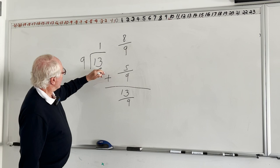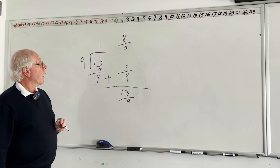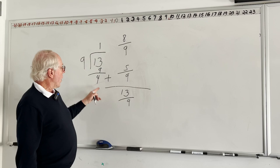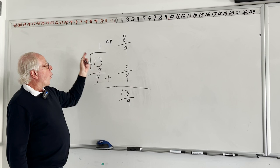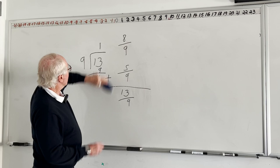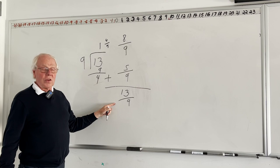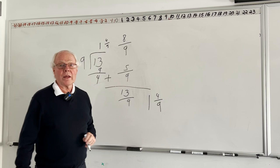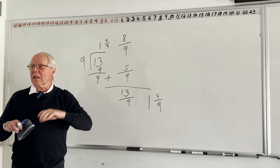Nine goes into thirteen one time. One times nine is nine, and we have four left over. Now here's where I disagree with a lot of teachers — we were all taught to just write R4. But R4 for what? It's four-ninths. This problem is all about ninths, so that remainder is four-ninths. Instead of writing R4, we more correctly write four-ninths. So the answer is one and four-ninths. Step by step, these problems are adding a little lesson each time.